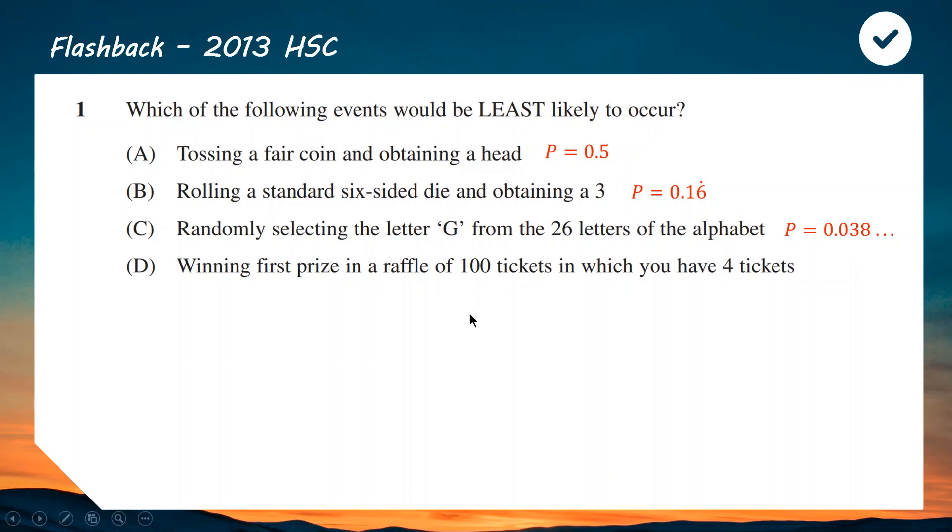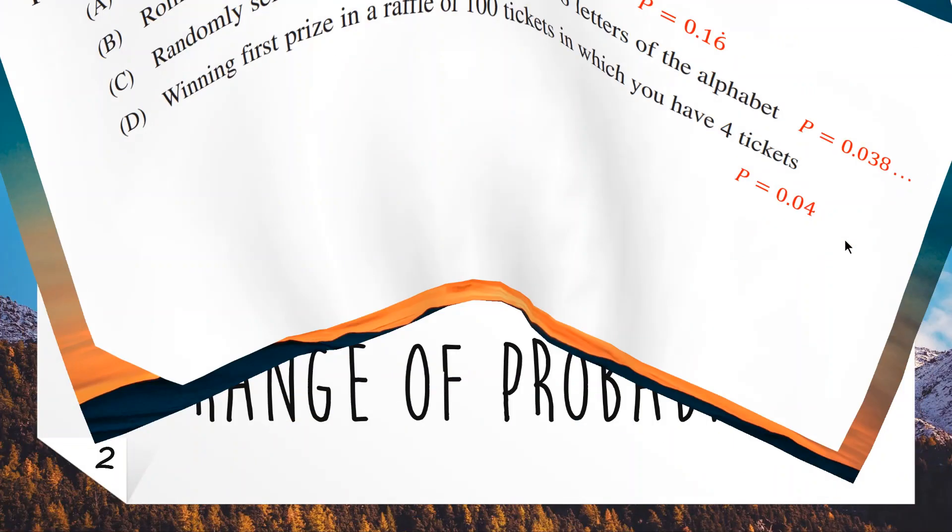The last one, winning first prize in a raffle of 100 tickets and you have four tickets. You've got a four out of 100 chance, which as a decimal is 0.04. Now that you have all those, you can see you've got 50% here, about 16-17% here, 4% here, and this is a bit less than 4%. So C is the least likely.